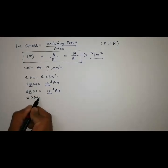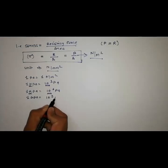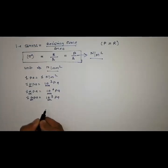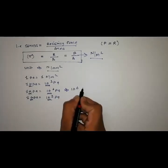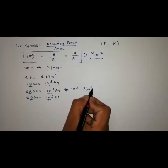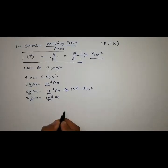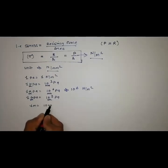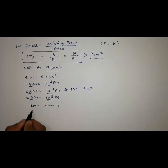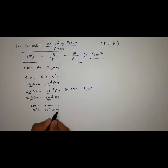1 Gigapascal is equal to 10 raised to the power 9 Pascal. G stands for 10 raised to the power 9. Therefore, 10 raised to the power 6 Pa is 10 raised to the power 6 Newton per meter square. As we know, 1 meter is equal to 1000 mm, that is 1 meter square is equal to 10 raised to the power 6 mm square.